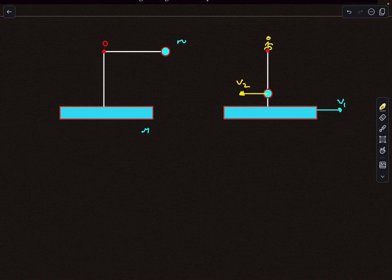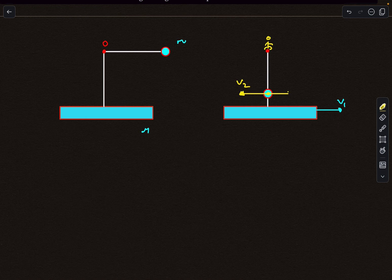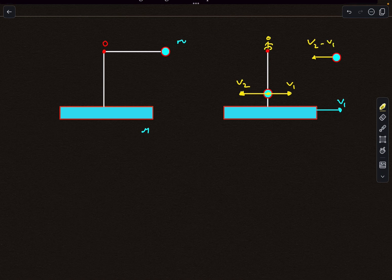With respect to ground frame, we'll have to add the velocity of V1 vectorially to it. From the ground frame, it will appear as if the ball has a velocity of V2 minus V1 towards the left.